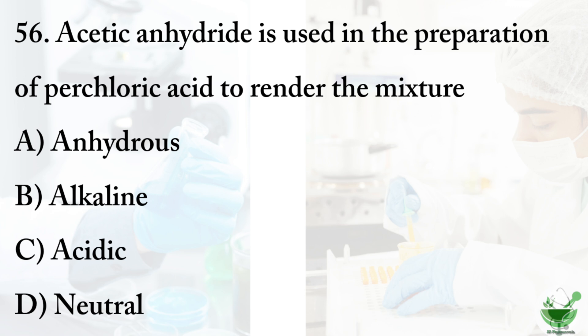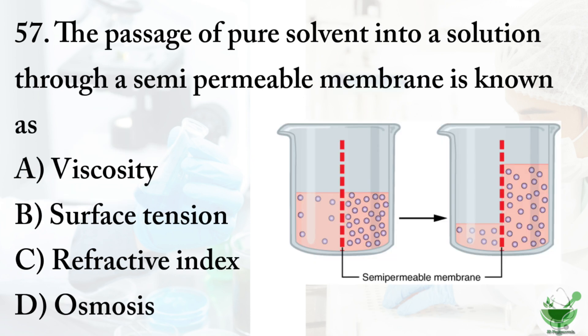Question number 56: Acetic anhydride is used in the preparation of perchloric acid to render the mixture — option A, anhydrous; option B, alkaline; option C, acidic; option D, neutral. The correct option is option A, anhydrous. Question number 57: The passage of pure solvent into a solution through a semi-permeable membrane is known as — option A, viscosity; option B, surface tension; option C, refractive index; option D, osmosis. The correct option is option D, osmosis.